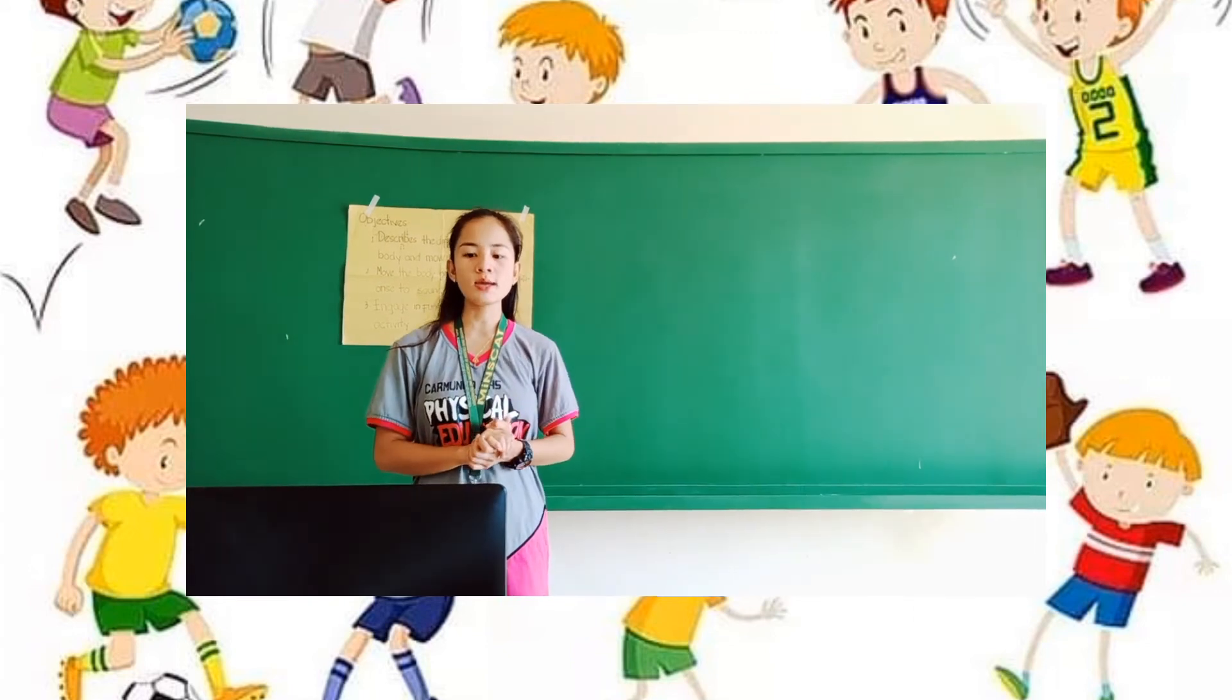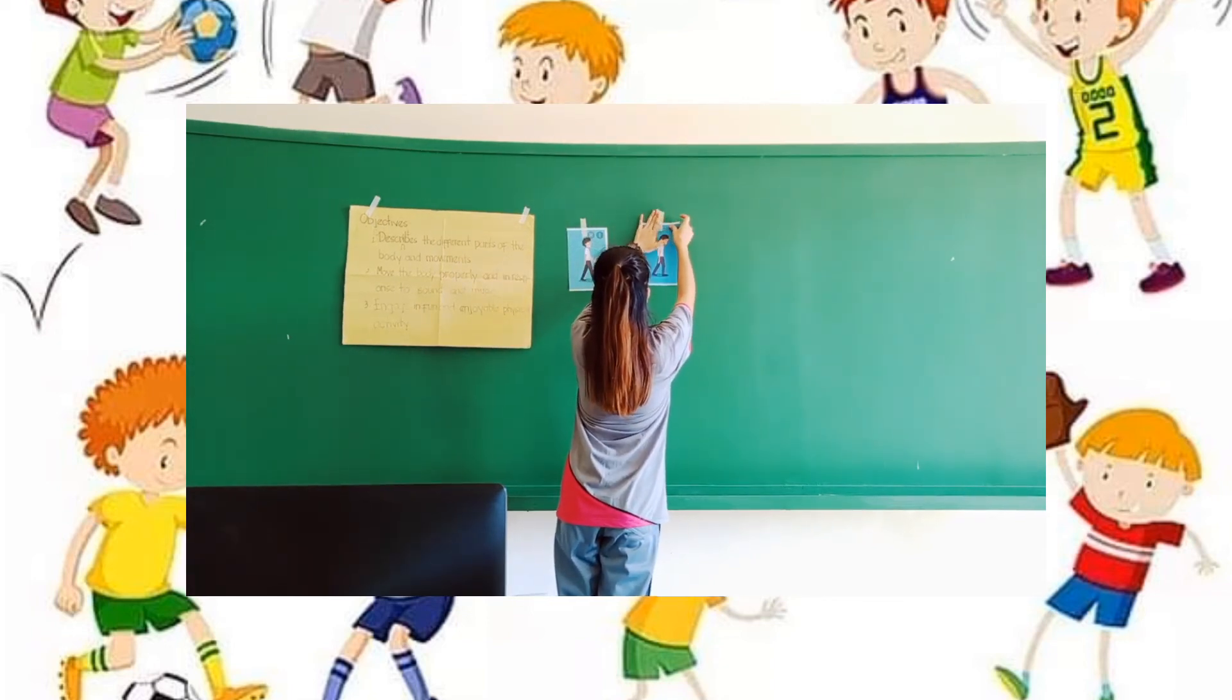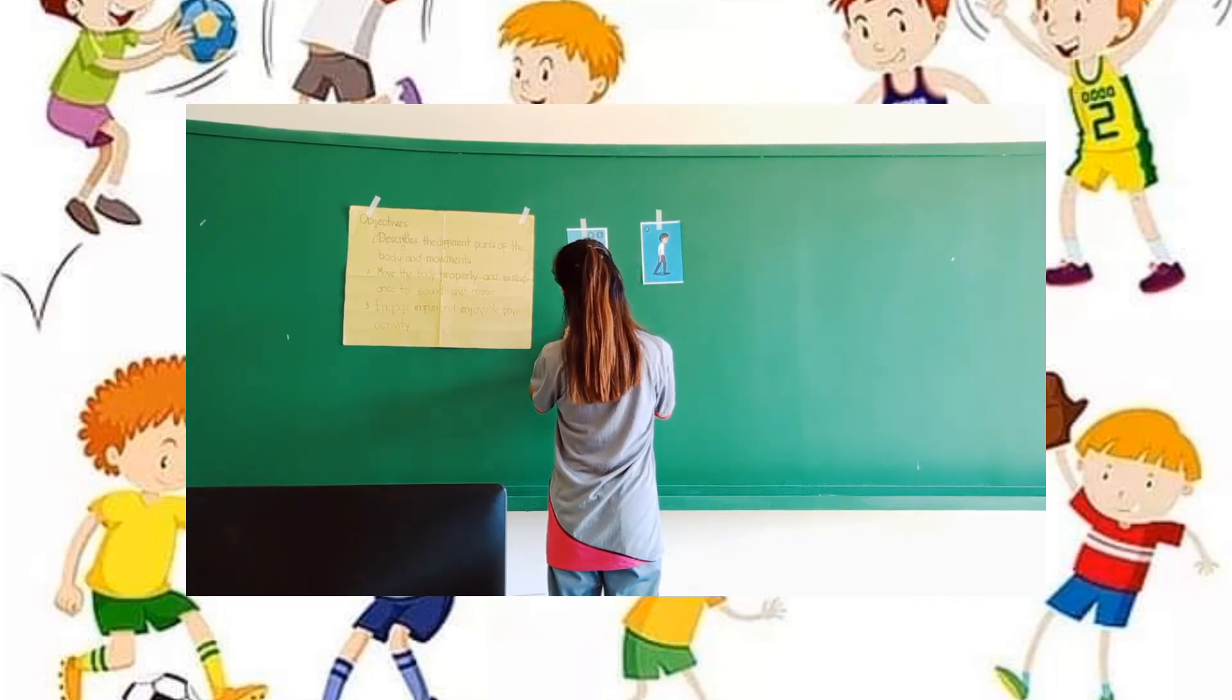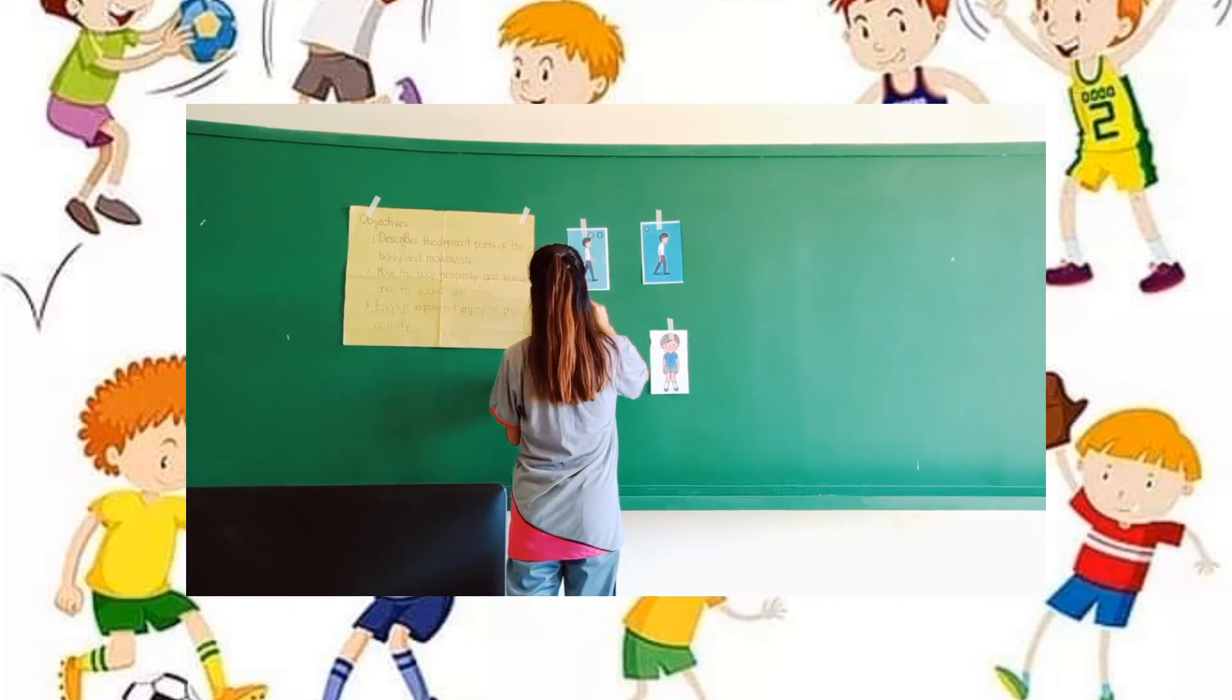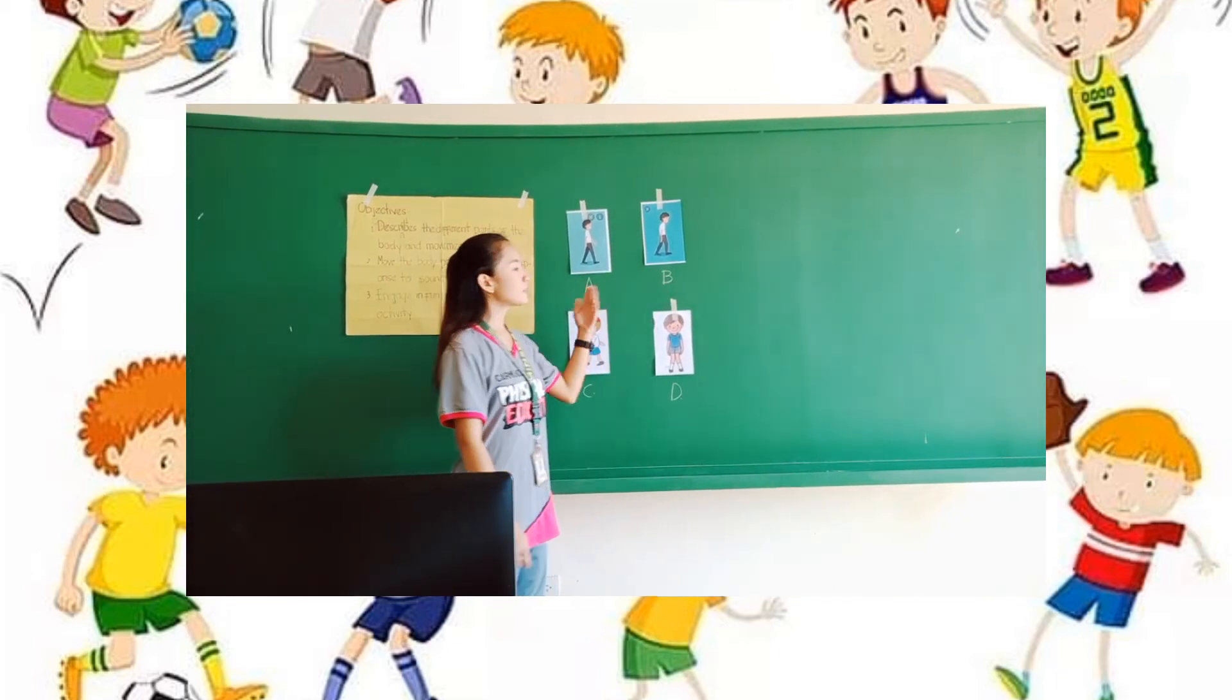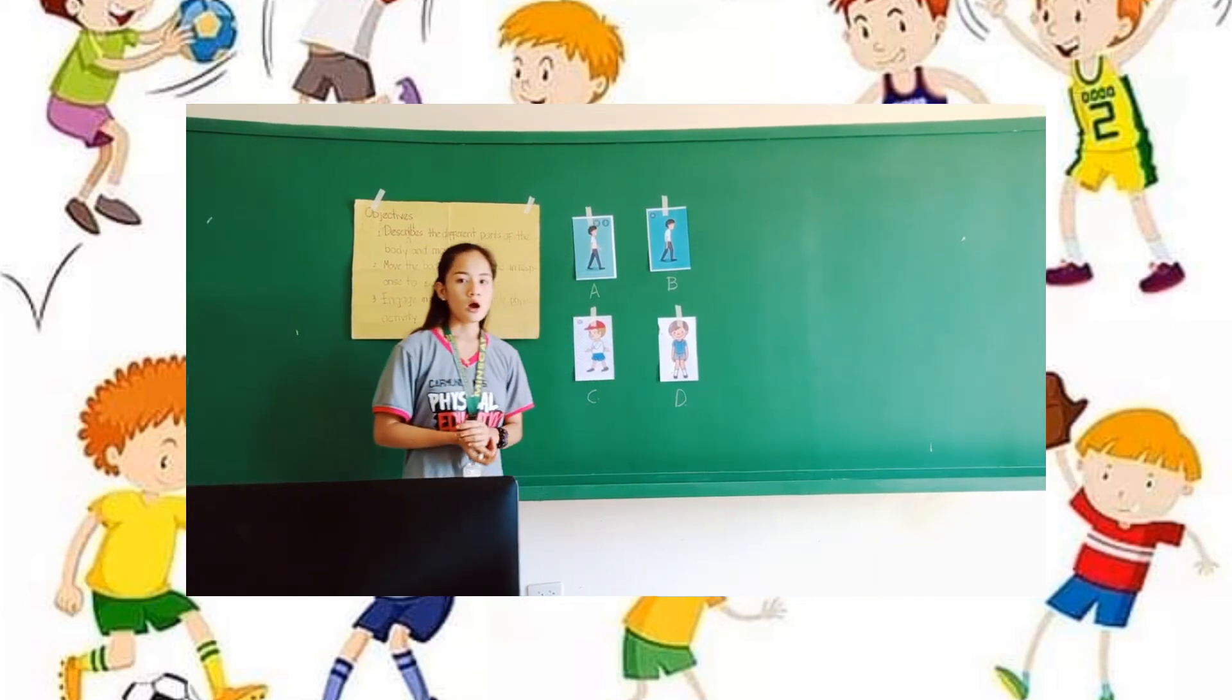So, now, I am going to show eight pictures. So compare picture A and B. This shows being in different postures. While the picture is C and picture D, so what can you see? Which one shows proper posture, picture C or picture D? Okay, very good.